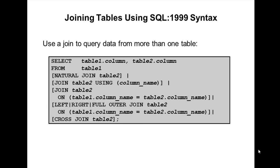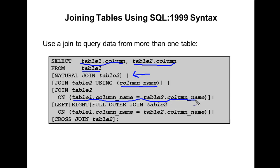The basic syntax for joins is: SELECT table1.column, table2.column FROM table1 [NATURAL JOIN table2] | [JOIN table2 USING (column_name)] | [JOIN table2 ON (condition)] | [LEFT OUTER | RIGHT OUTER | FULL OUTER JOIN table2]. This covers the different join types and their syntax.